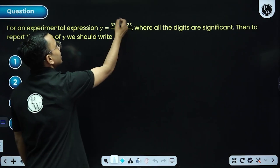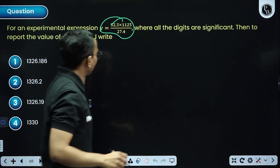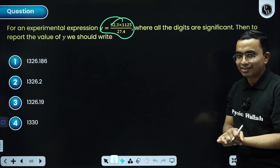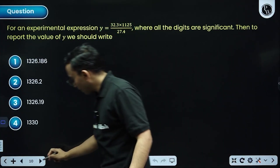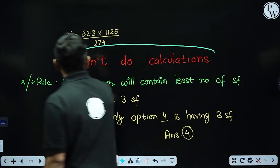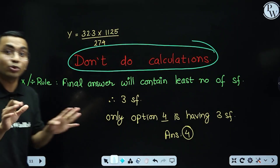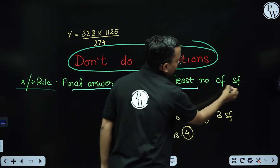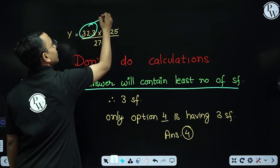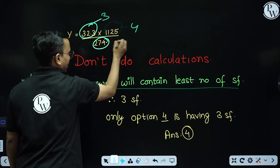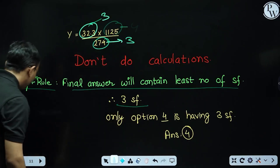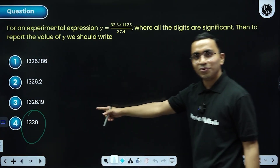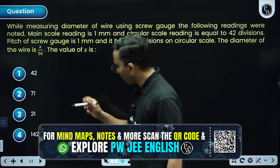Next question: an expression is given and we need to find the value of y in terms of proper significant figures. Do not do full calculations — instead, apply the rules of multiplication and division for significant figures. The final answer must contain the least number of significant figures among the terms: three, four, and three significant figures — so the final answer has three significant figures. Among the options, only option four has three significant figures, so that is the answer.